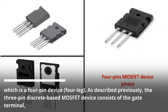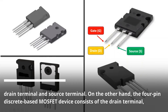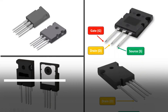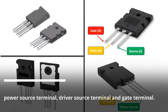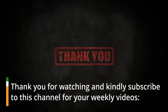The three-pin discrete-based MOSFET device consists of the gate terminal, drain terminal, and source terminal. On the other hand, the four-pin discrete-based MOSFET device consists of the drain terminal, power source terminal, driver source terminal, and gate terminal. Thank you for watching, and kindly subscribe to this channel for your weekly videos.